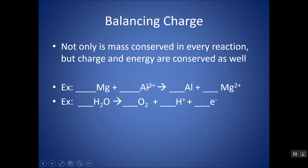So here, my number of atoms are the same. There's one Mg, one Mg, but my charges are not. So notice there's three plus total on the left, and there's two plus total on the right. To balance that, I could put a two in front of the Al and a three in front of the Mg, and now I have a six plus charge on either side.